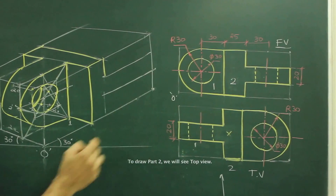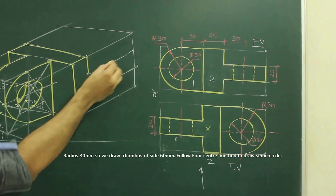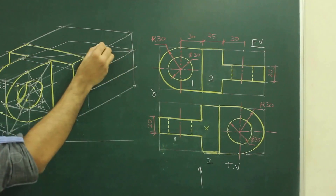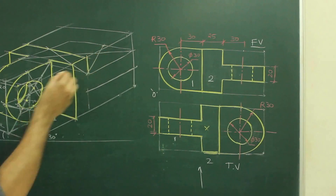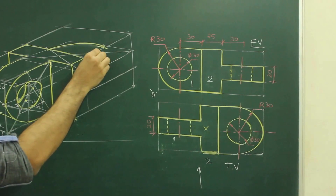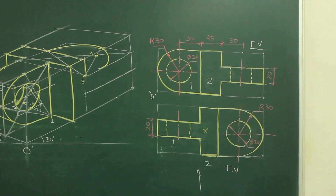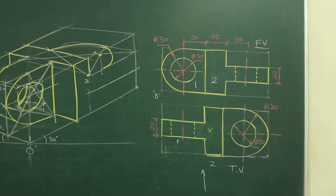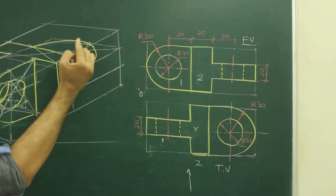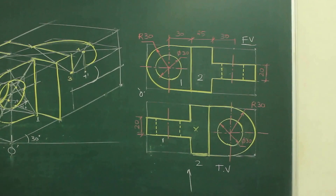Now for part 2, we need to see the top view. The same kind of circle is there in the top view as well, so we need to repeat the same procedure. The radius is 30, so we take 16 in each direction to get a rhombus. We draw the longest diagonal, mark the midpoints, and join to these points. From point 3 and point 4 we draw the arcs. Then from point 4, we will go down by 20 — because in the main diagram the height is 20. We mark that point as 4', take this radius, go down by 20, and draw the arc. Then we draw the tangent.